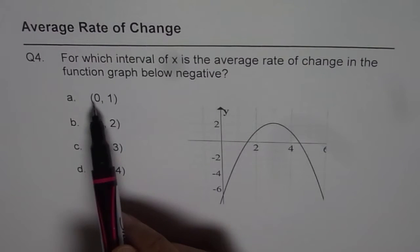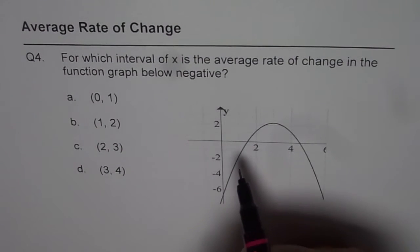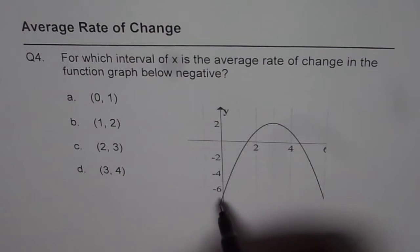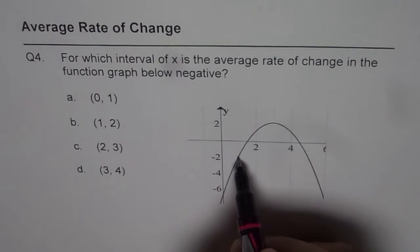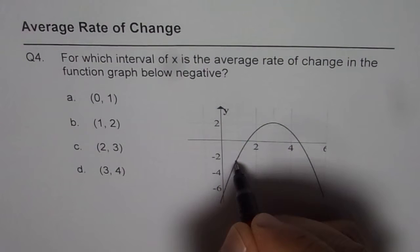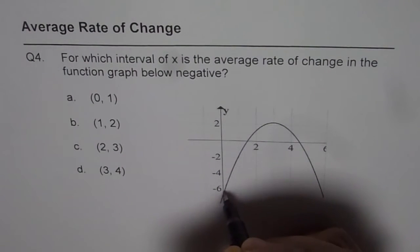So these are the different intervals. 0 to 1—these are the x values. So 0 to 1, 1 is here. If I draw this line, then I get a positive slope, not negative. Therefore, the average rate of change is positive in this interval.